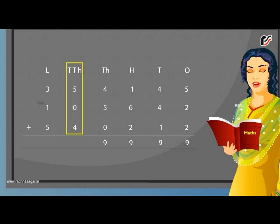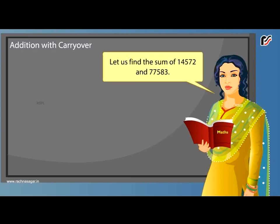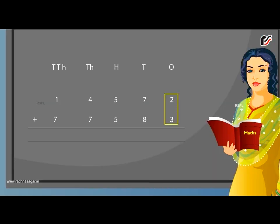Next, add the tens thousands: 5 plus 0 plus 4 is equal to 9 tens thousands. Write 9 under the tens thousands column. Finally, add the lakhs: 3 plus 1 plus 5 is equal to 9 lakhs. Write 9 under the lakhs column. Thus the sum is 9,99,999. Addition with carryover. Let us find the sum of 14,572 and 77,583.